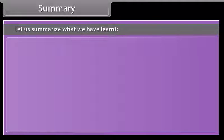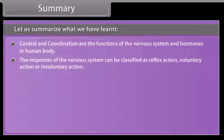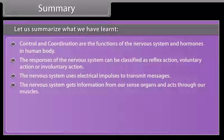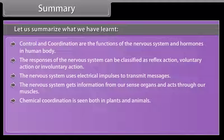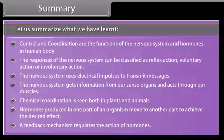Control and coordination are the functions of the nervous system and hormones in the human body. The responses of the nervous system can be classified as reflex action, voluntary action, or involuntary action. The nervous system uses electrical impulses to transmit messages and gets information from our sense organs, acting through our muscles. Chemical coordination is seen both in plants and animals. Hormones produced in one part of an organism move to another part to achieve the desired effect, and a feedback mechanism regulates the action of hormones.